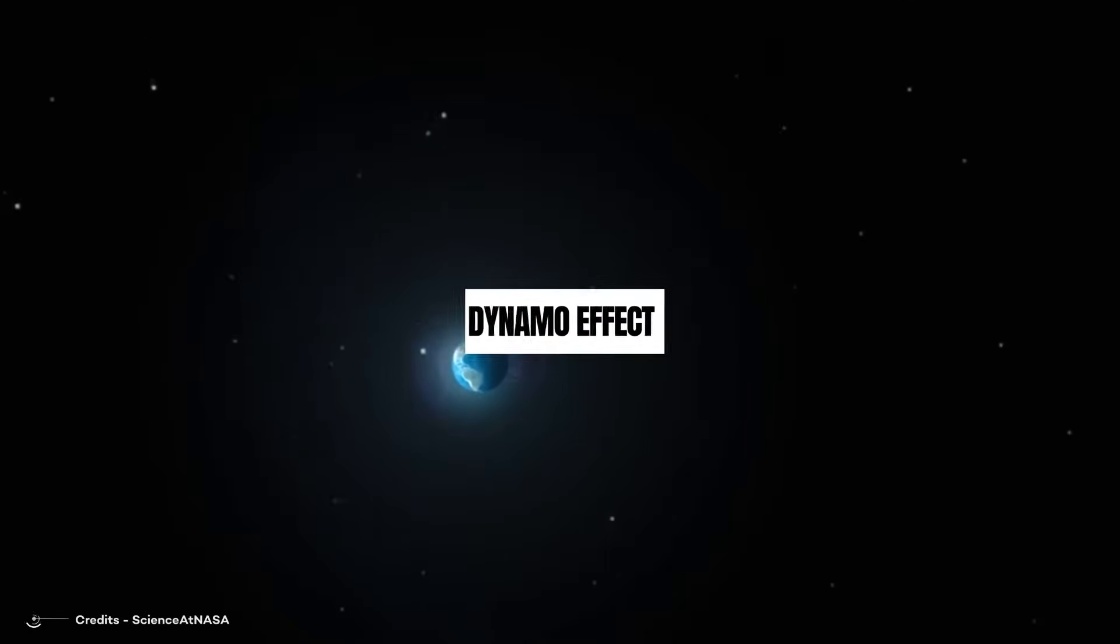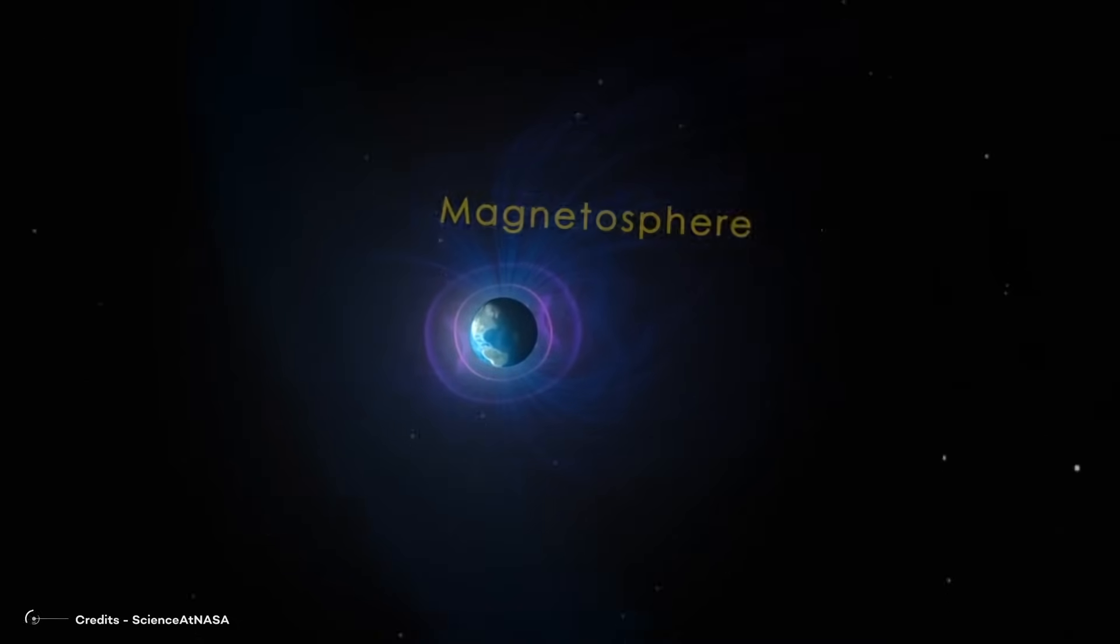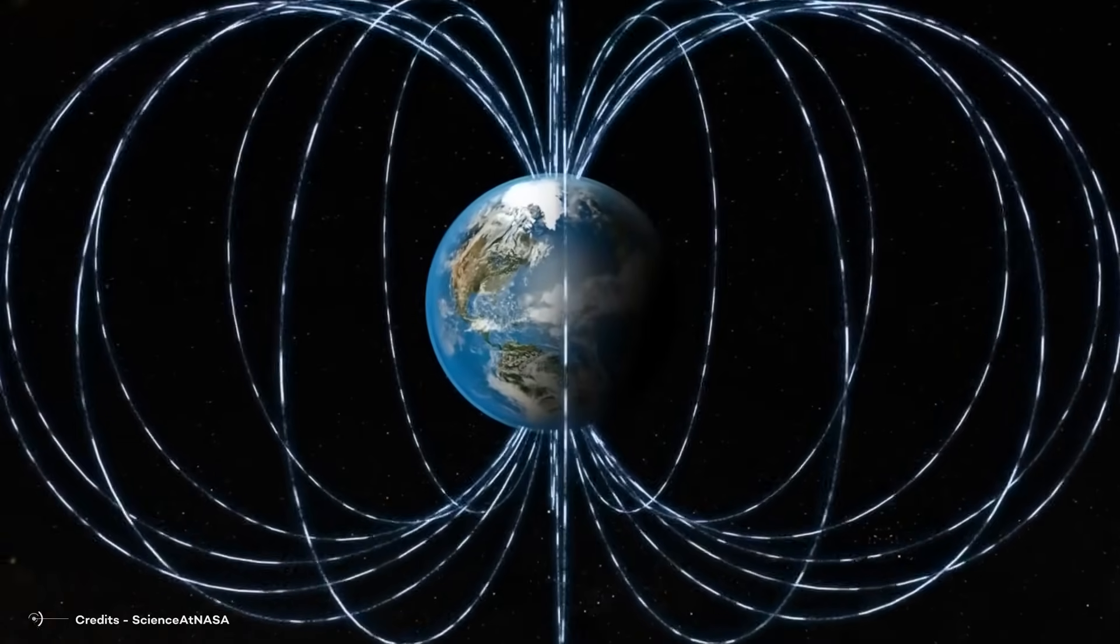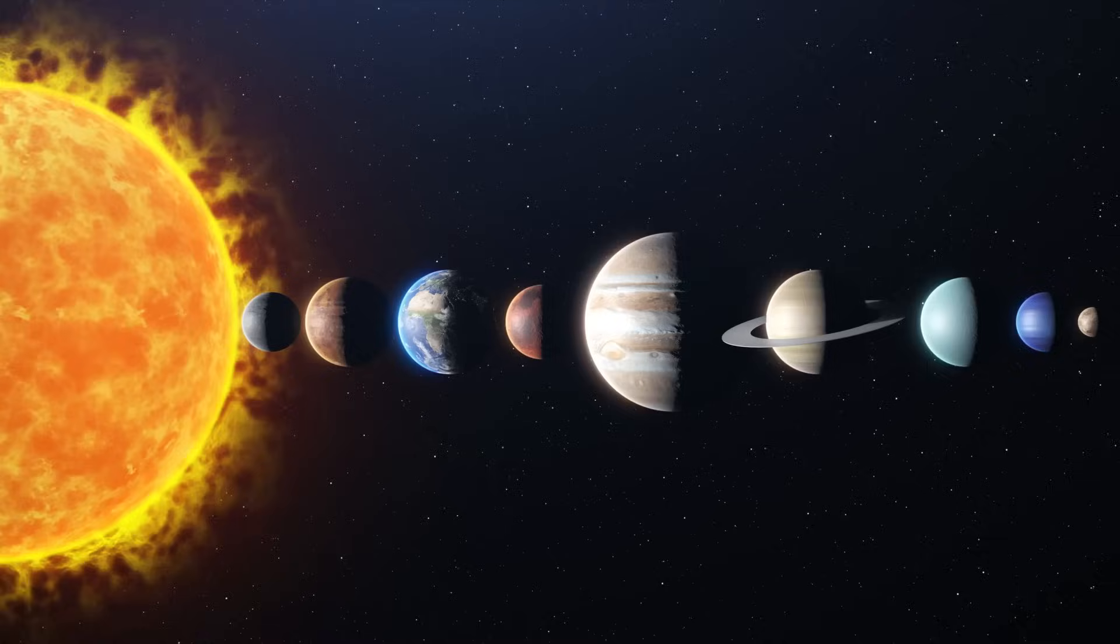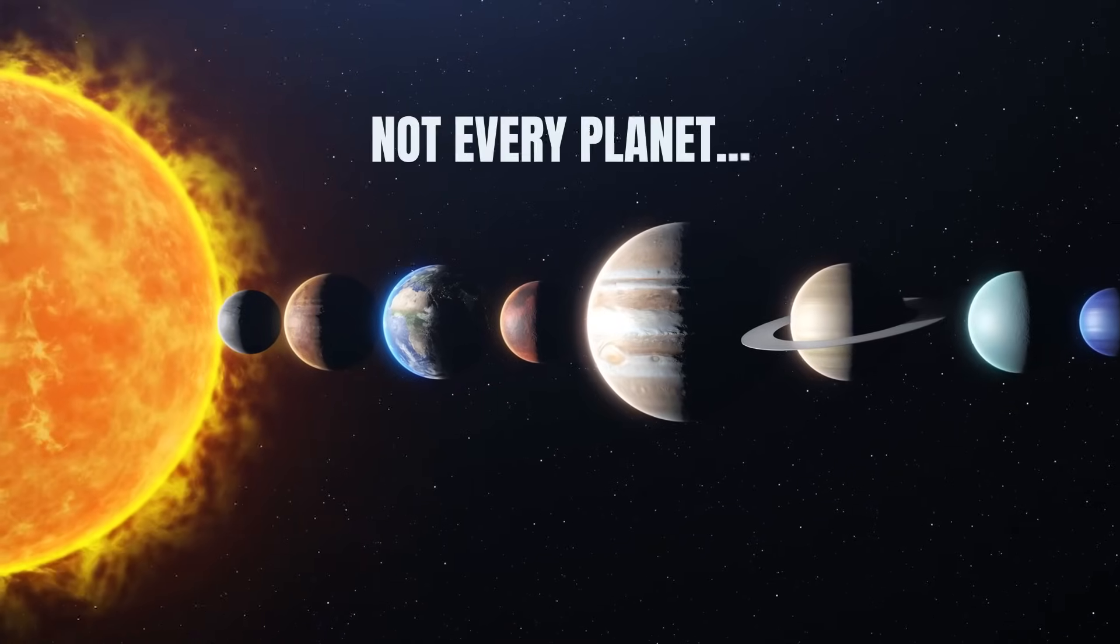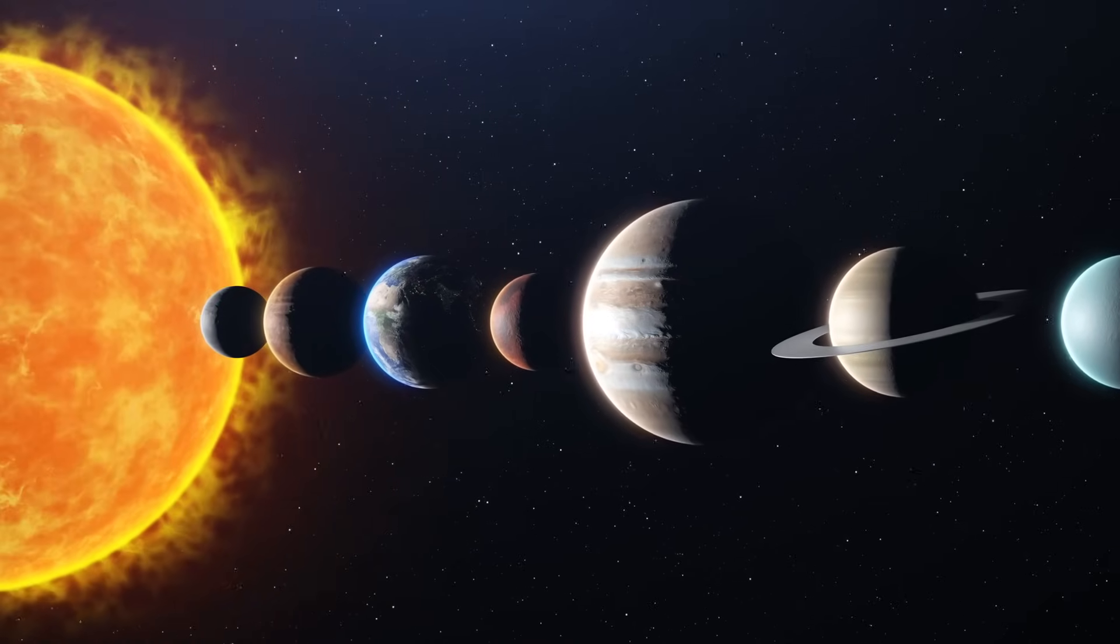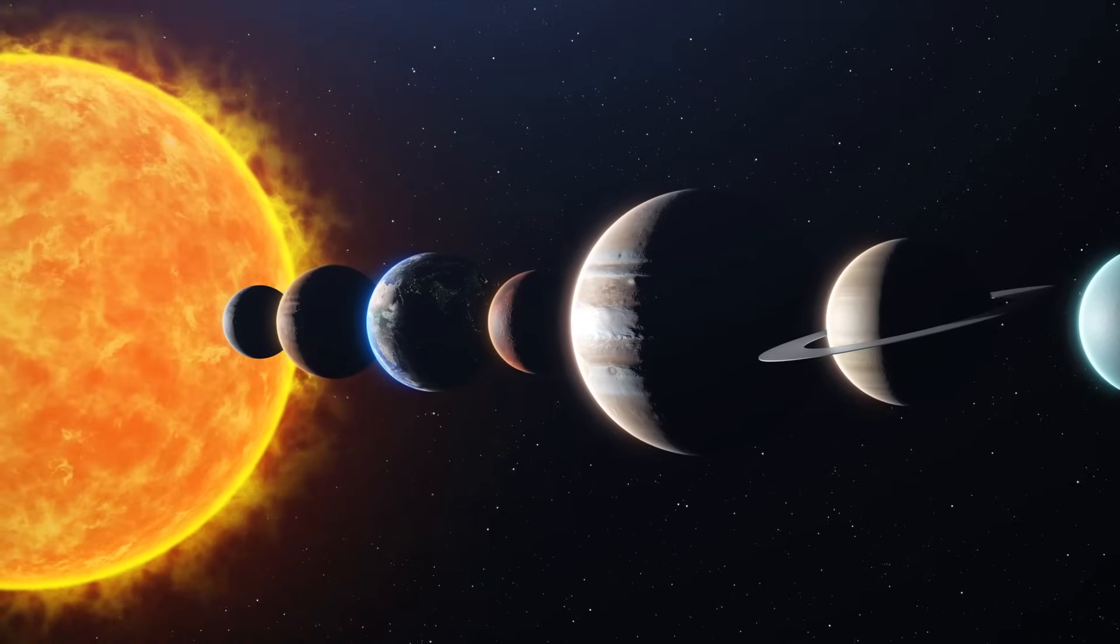Dynamo Effect. Imagine the Earth like a giant magnet with a magnetic field around it. This invisible force helps compass needles point north and protects our planet from harmful solar winds. Now, here's the interesting part: not every planet gets to have this magnetic field party. Why? Well, it depends on what's happening in their cores.